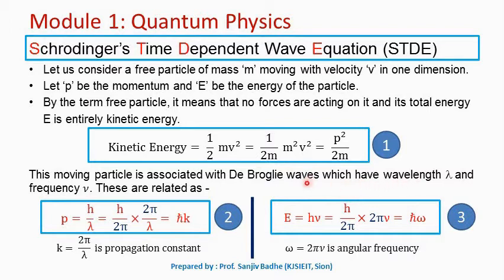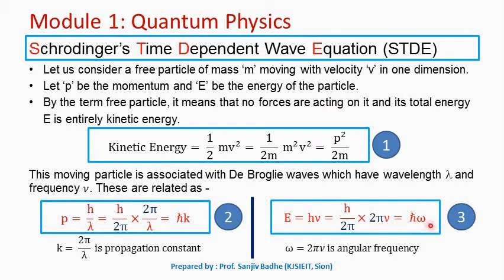If ν is the frequency of the wave associated with the particle, then the energy of the particle will be hν, where h is Planck's constant. Multiplying and dividing by 2π, h/2π is ℏ and 2πν is ω. So energy E can be written as ℏω, where ω is the angular frequency. Let us call this equation number 3: E = ℏω.